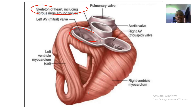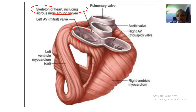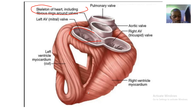Looking at this image of the skeleton of the heart, what we have here is only the ventricles, so the atria should be above. The skeleton of the heart is essentially what lies between the atria and the ventricles, providing attachment for the muscles. See you guys in the next tutorial!